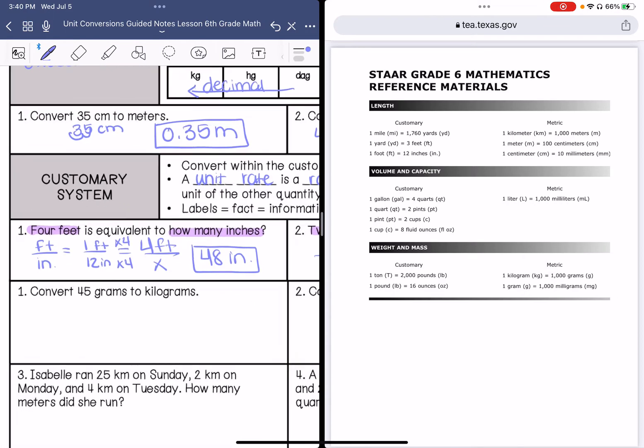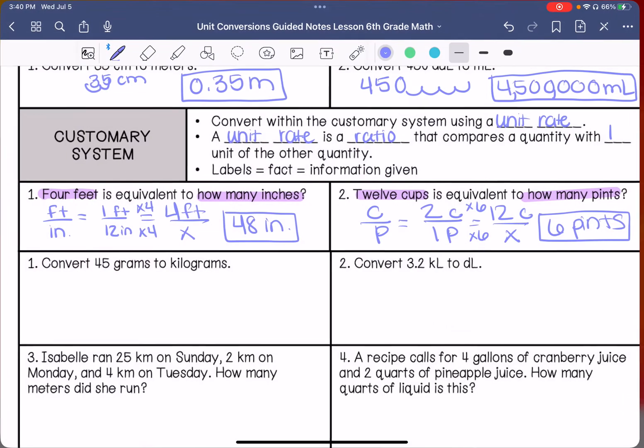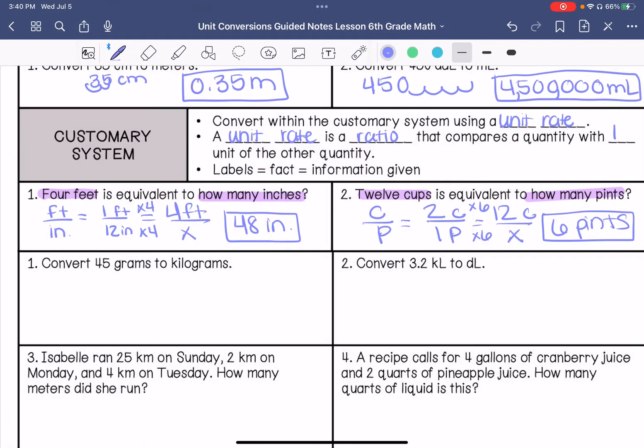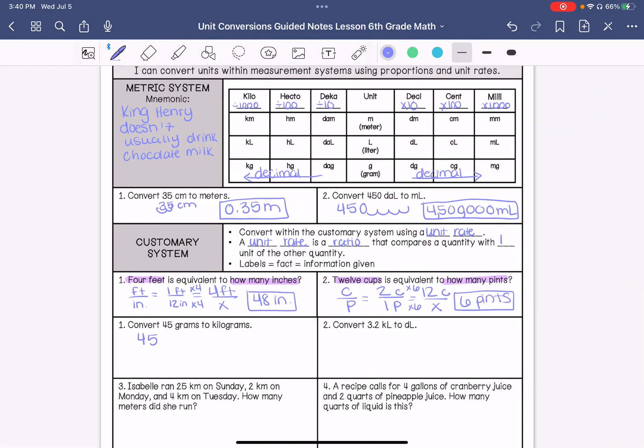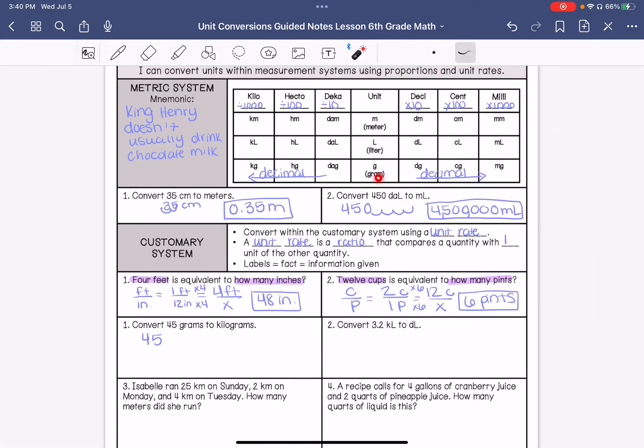Now we have a mixture of problems. This is my metric system, so I don't need my reference chart. Converting 45 grams to kilograms. So grams, one, two, three. That's 0.045 kilograms.